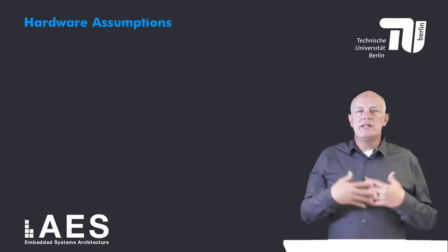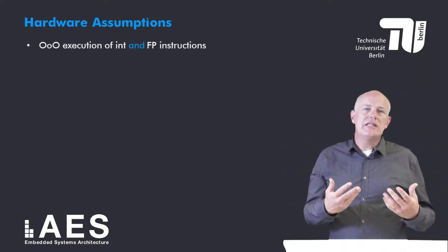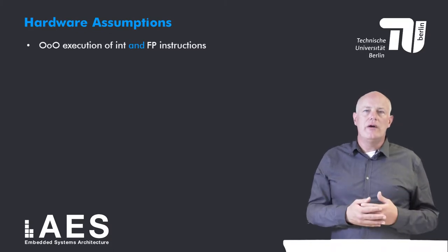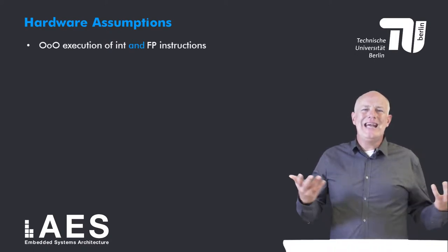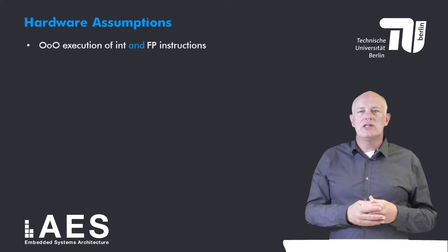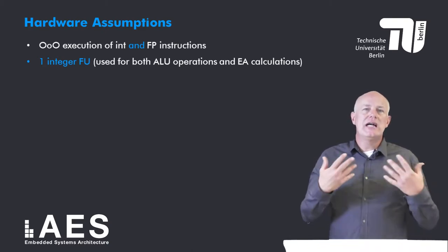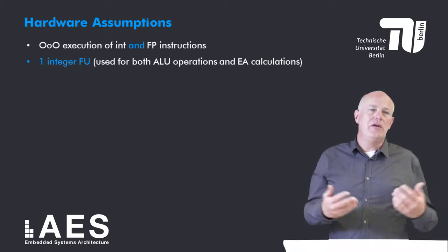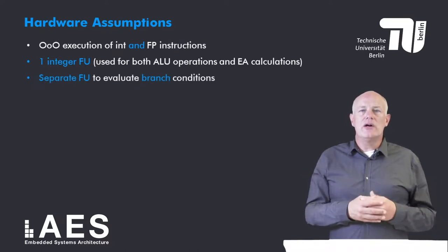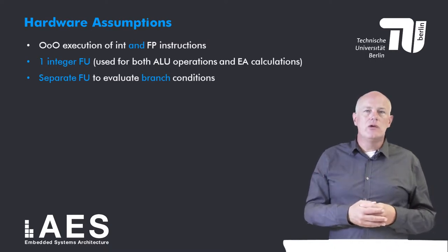This slide summarizes the hardware assumptions. First, the processor can execute both integer instructions as well as floating point instructions out of order. In the previous lesson I focused on the design of a Tomasulo-based floating point unit, but it can be easily extended to all instructions and I will assume so in this lesson. Second, our processor has one integer functional unit which is used for both ALU operations as well as effective address calculations. Third, there is a separate functional unit to evaluate branch conditions, so branch instructions are not executed on the integer unit.